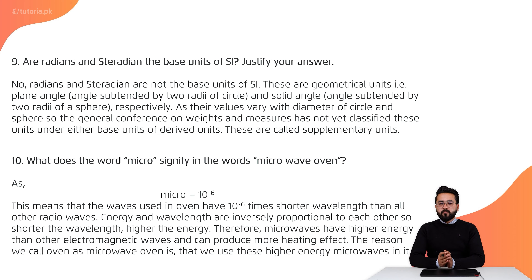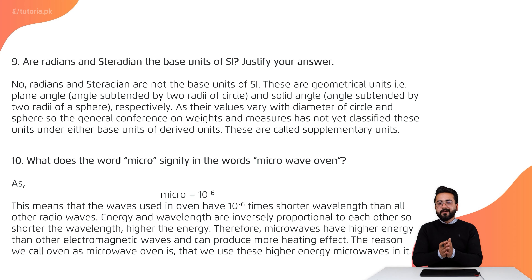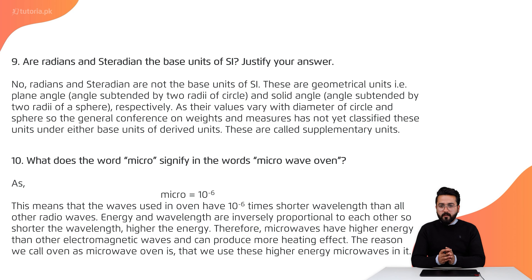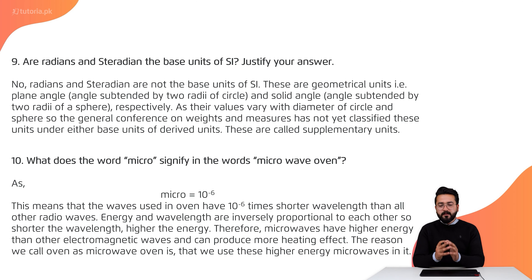The waves which are used in the microwave oven have a wavelength equal to 10 raised to power minus 6. That is why we use these waves, and that is why it is called a microwave oven. In a microwave oven, we use these waves to heat food or other things.